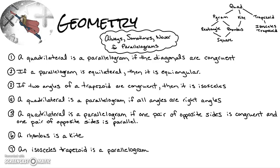I've put together a list of as many always-sometimes-never questions as I could find for parallelograms. I've also put the flowchart in the upper right corner showing how a quadrilateral leads to either a parallelogram, kite, or trapezoid, and then down from there. There are 21 of these, so I'm going to go through them at a fast pace.